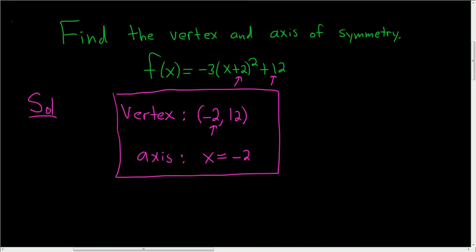If you wanted to look at the formula, the formula is f(x) equals a times x minus h quantity squared plus k. And the formula says that the vertex is h, k.